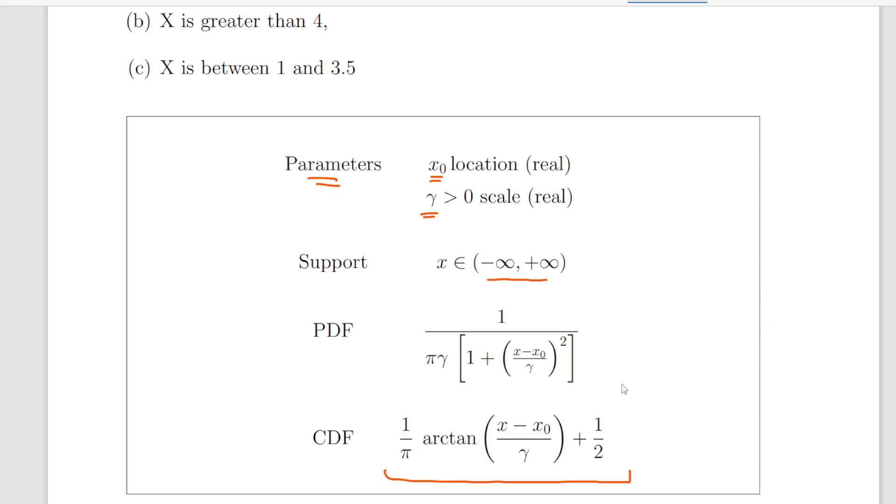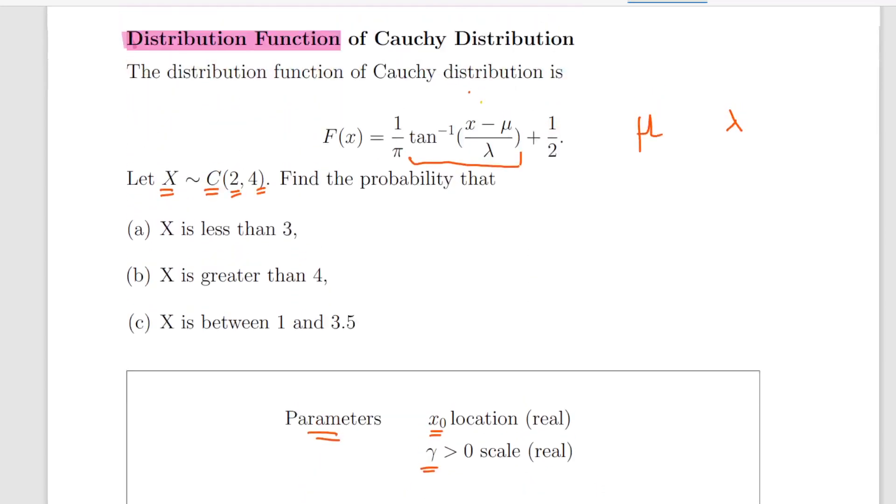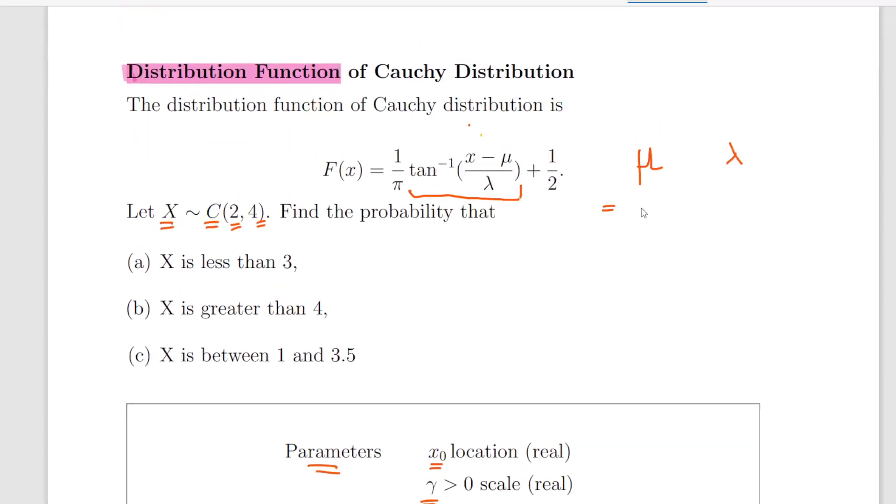Okay, so we have X_0, the location parameter, and gamma down there. So we can sort of say that this is the X_0, that is the location parameter, and that is the gamma there.